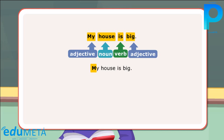One punctuation mark is essential in a sentence, i.e., full stop, question mark, or exclamation mark, used at the end of a sentence. Example: full stop at the end of a sentence.